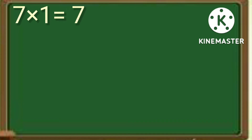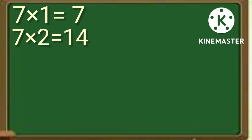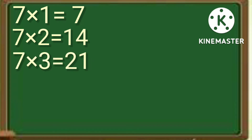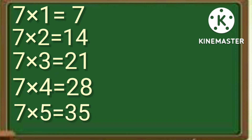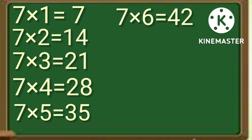7 times 1 is 7. 7 times 2 is 14. 7 times 3 is 21. 7 times 4 is 28. 7 times 5 is 35. 7 times 6 is 42.